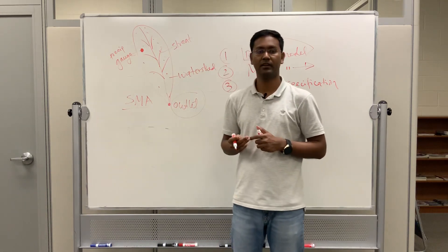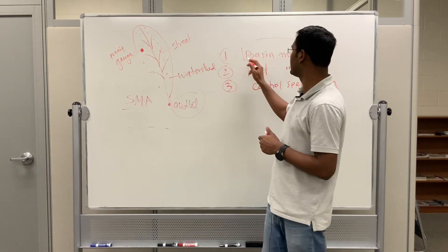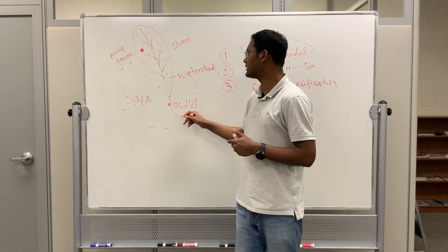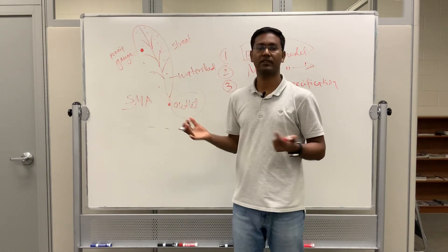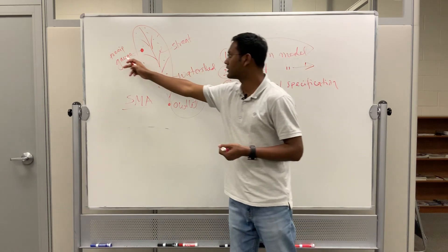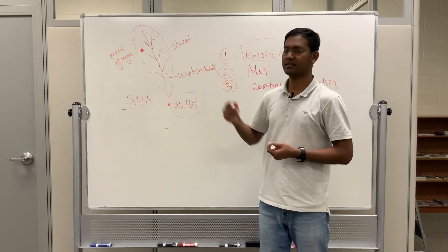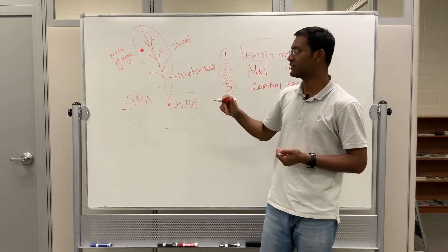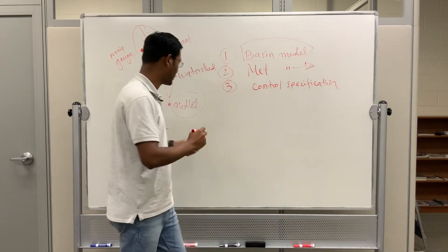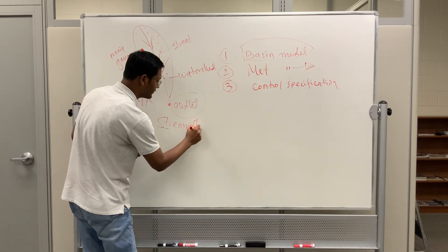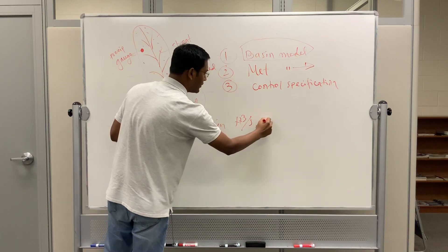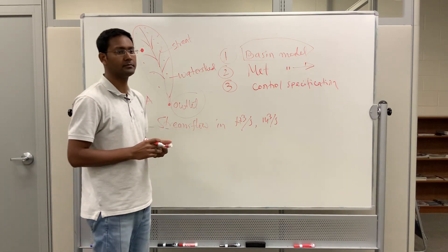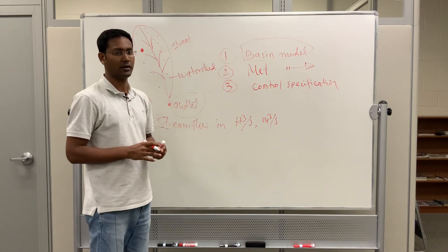The loss method is a very important component in the HEC-HMS model. In the Basin model you have to specify the basin properties: the area of the basin, the stream links, the outlet location, and whether there is any diversion or additional input. In the MET model you provide your forcing — the precipitation. If you provide precipitation as depth in inches, millimeters, or centimeters, you will get streamflow or runoff in cubic feet per second or cubic meters per second, based on your selected model units.